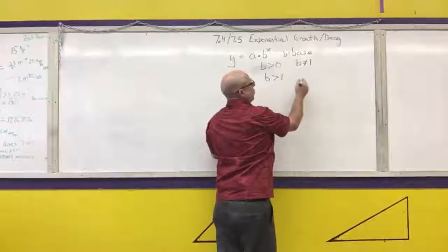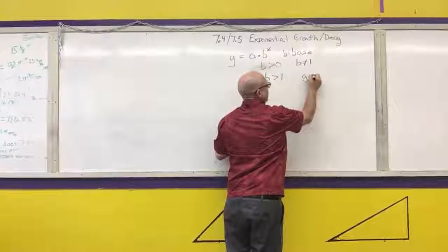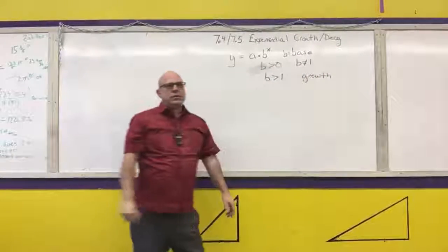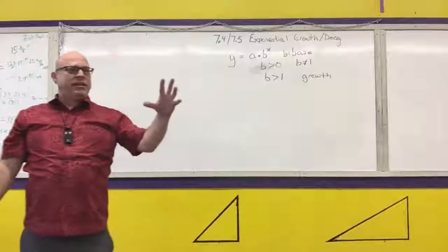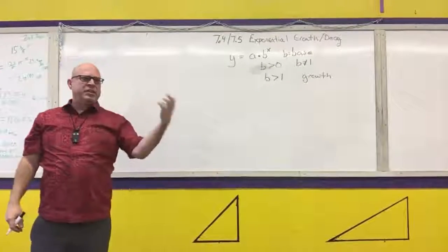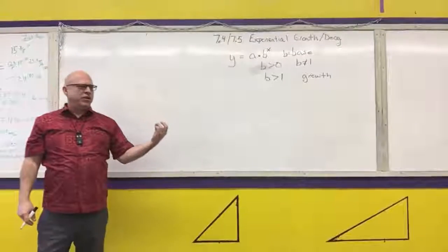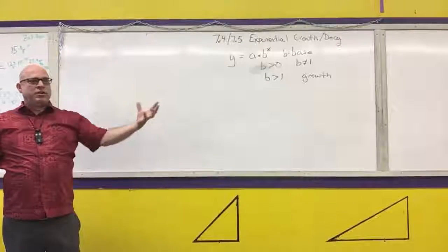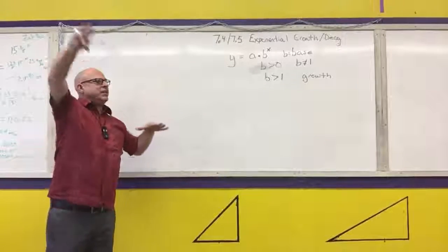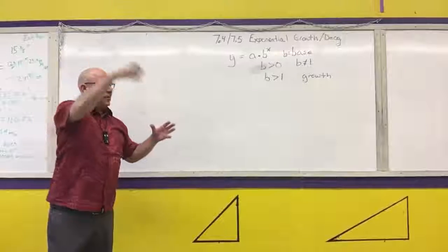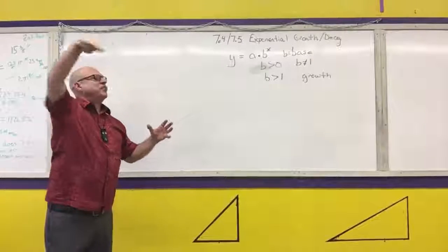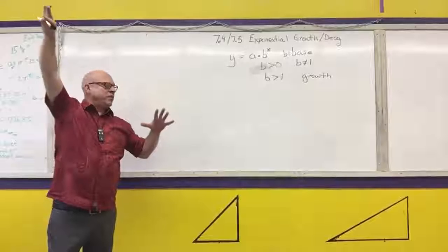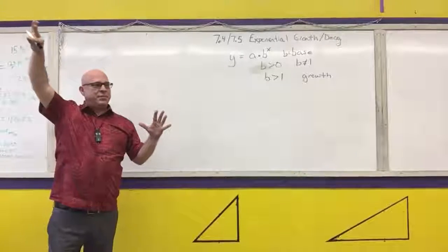If b is greater than 1, it's going to be a growth function. We did this with the Skittles — the growth was how many went into the cup. As you shook them, you kept putting more and more into the cup. If we had looked at how many of the total were in the cup, that would have been a growth function.